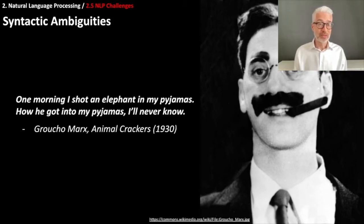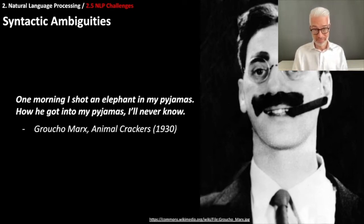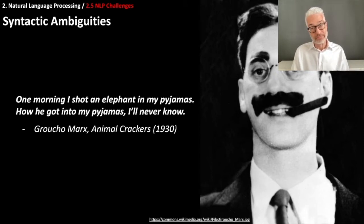A famous example of syntactic ambiguity is Groucho Marx — a famous comedian from the 1930s and 40s. In his movie 'Animal Crackers' from 1930, as Captain Spaulding, he says: 'One morning I shot an elephant in my pajamas. How he got into my pajamas, I'll never know.' Syntactic ambiguities can also be shorter: 'Get the cat with the gloves' — is the cat wearing the gloves or do I wear the gloves to get the cat? Or again: 'Kids make nutritious snacks.'